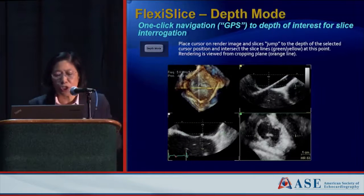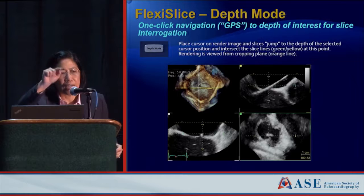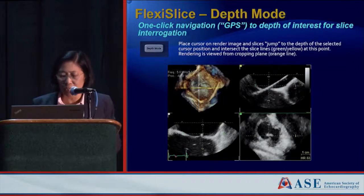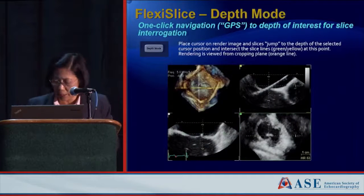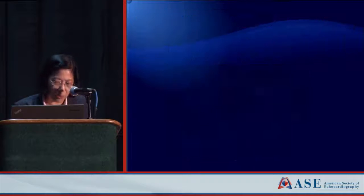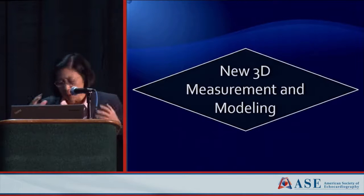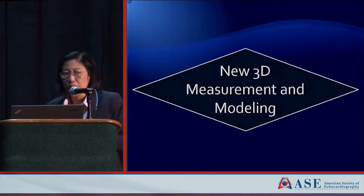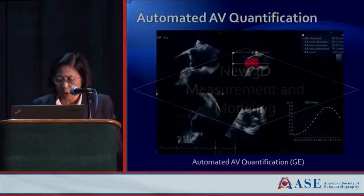Depth mode lets you point to a place on the 3D image and it immediately understands that you want to image at a slightly deeper depth, going directly to that depth. We'll use this very frequently for catheters — particularly for paravalvular leak closures.